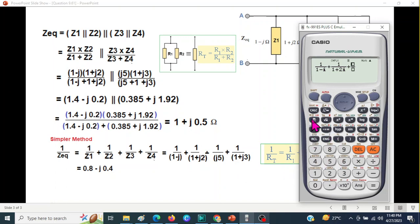j5, box 1 down, 1 + 3i, move ahead, plus sign, box 1 down, 1 + 3i, move ahead. So this is 0.8 - 0.4j. Now we have to find Z equivalent which is inverse of this.